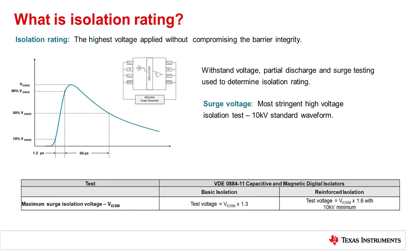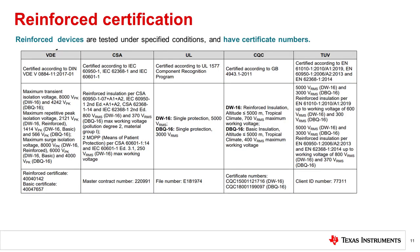A reinforced rated digital isolator must pass the surge waveform test at 1.6 times the rated isolation voltage, but must also have a certified surge rating of 10 kV or greater. Reinforced digital isolators commonly have isolation ratings of 5 kV or greater, and surge ratings of greater than 10 kV. There are multiple standards that define the conditions of test for a reinforced isolator. For digital isolators, the VDE 08840-11 standard is the current standard and the most commonly used. To determine if the digital isolator you are considering meets the isolation standards required for your system, the certification numbers and conditions should be provided to you by the manufacturer. If proof of certificate cannot be provided, the component may not meet the safety requirements of your end equipment standard.